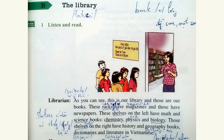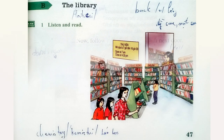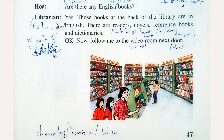These shelves on the left have math and science books — chemistry, physics and biology. Those shelves on the right have history and geography books, dictionaries and literature in Vietnamese. Are there any English books? Yes, those books at the back of the library are in English. There are readers, novels, reference books and dictionaries.